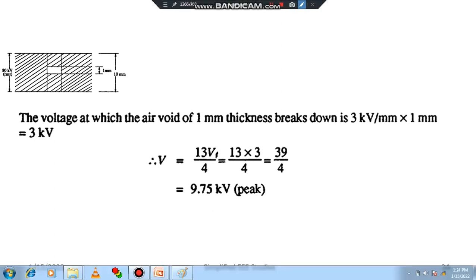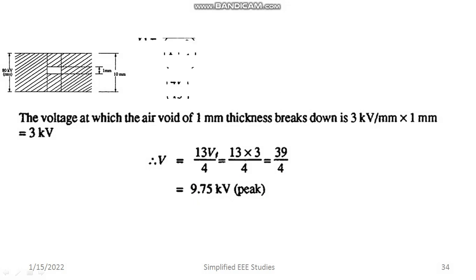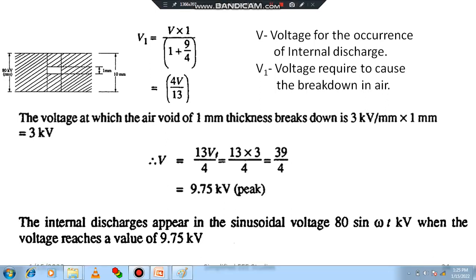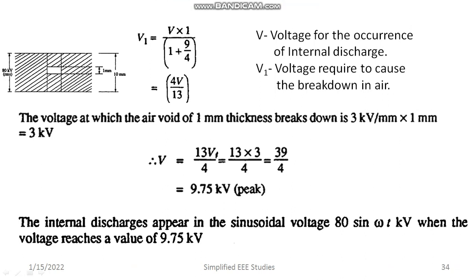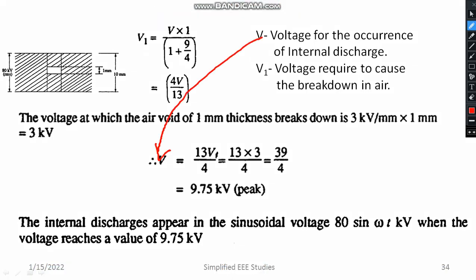Substituting V1 = 3 kV into V = 13V1/4 gives V = 13 × 3/4 = 39/4 = 9.75 kV. This is the voltage at which internal discharge takes place. We can conclude that for a sinusoidal operating voltage of 80 kV RMS — expressed as 80 sin(ωt) kV — the internal discharge occurs when the voltage reaches 9.75 kV. In this session, we discussed the concept of internal discharge and solved a numerical example.